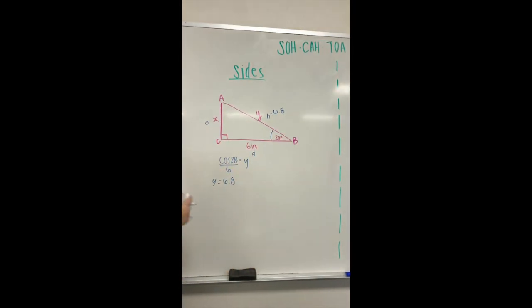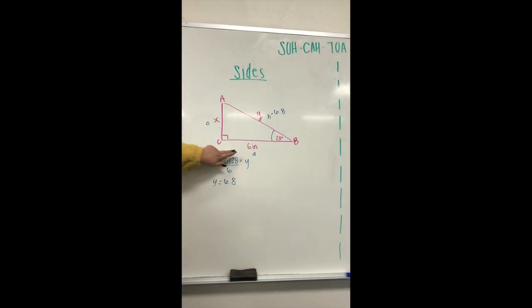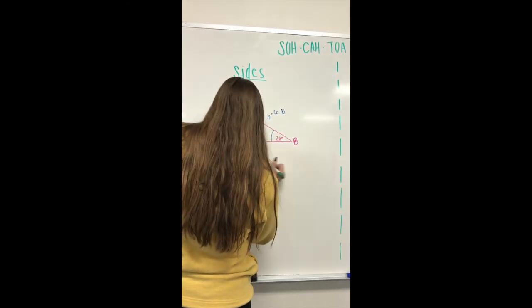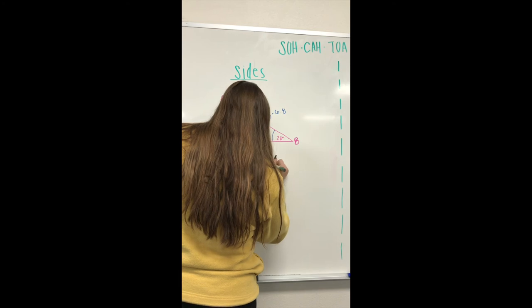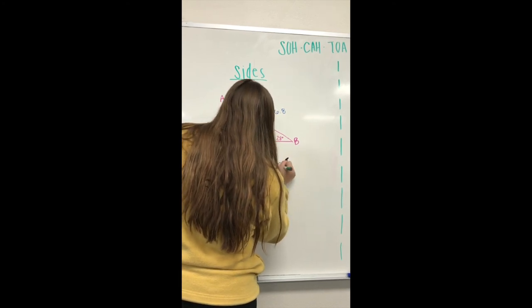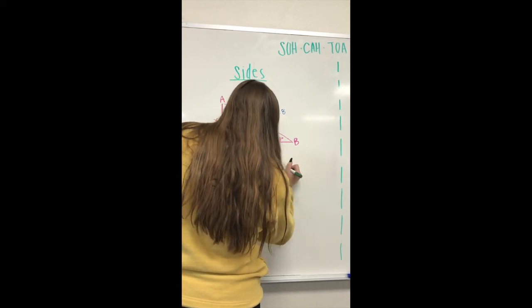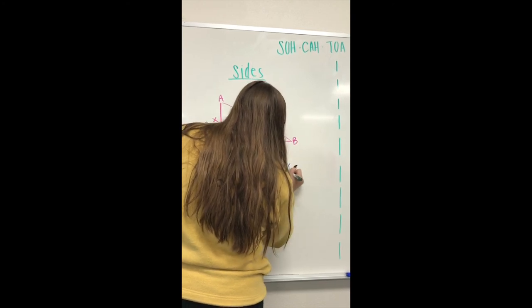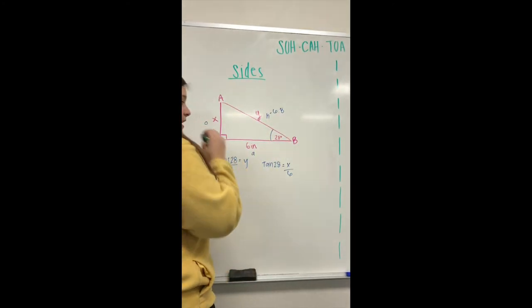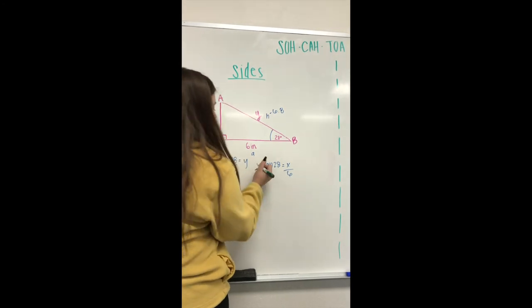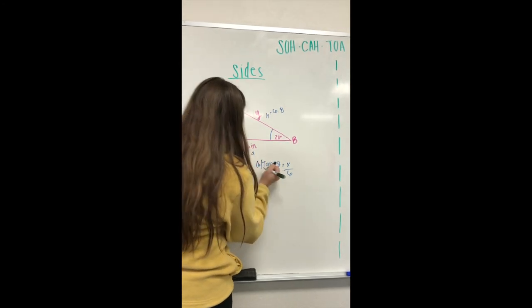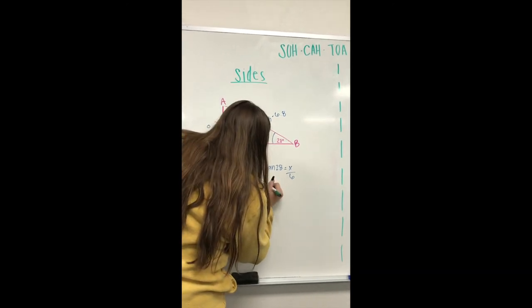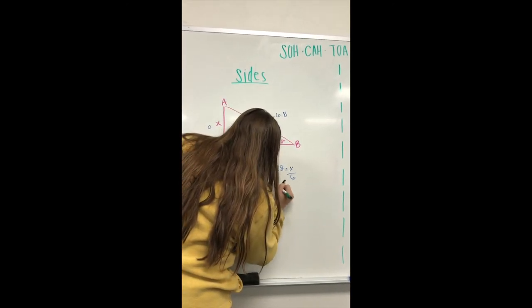Next we'll do tan, so that will be tan 28, which is your angle, equals x divided by 6. We multiply everything by 6, and our answer will be x equals 3.2.